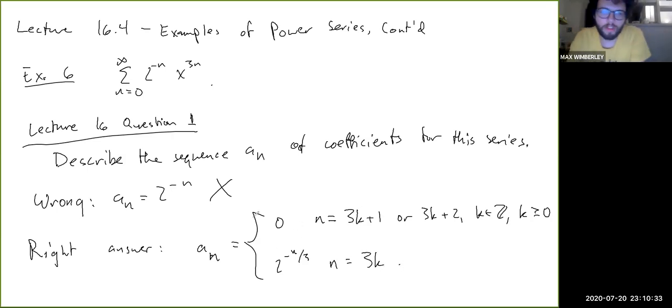Okay, so why did this become 2 to the minus n over 3? Well, remember the coefficient a_n is the coefficient of x to the n. So basically a_n should be, well, if a_n is the coefficient of x to the n, then if we think about, okay, for some value of n, right? Okay, so what's the coefficient? Like, let's ask ourselves, what's the coefficient of x to the fifth in this series, right? What's the coefficient of x to the fifth?